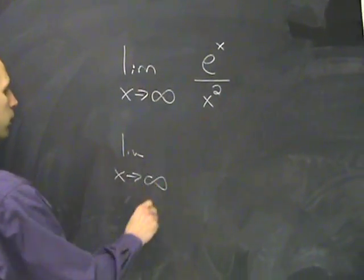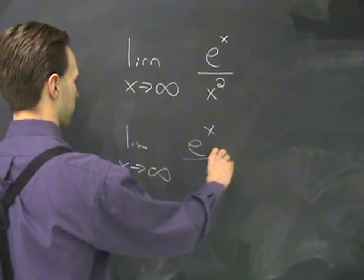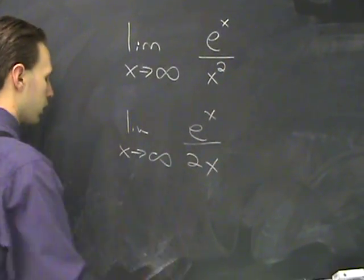Limit goes to infinity of, the derivative of the top is e to the x. The derivative of the bottom is 2x.